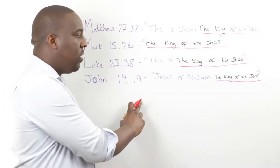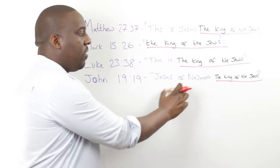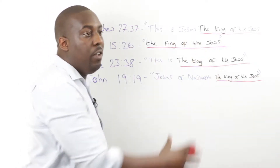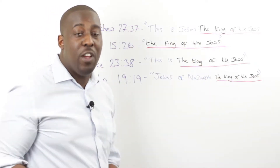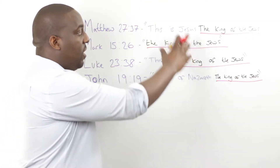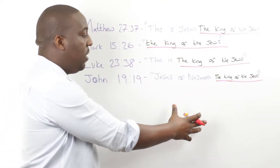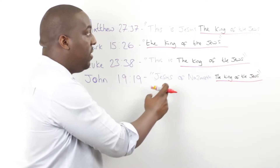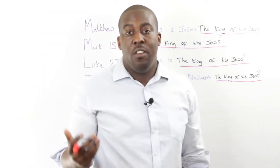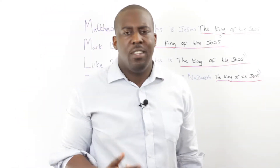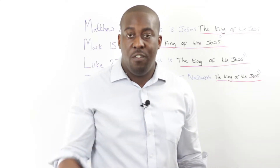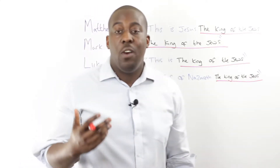Looking at all four, if you wanted a loose explanation, you could simply say that what this says in totality is: 'This is Jesus of Nazareth, the King of the Jews.' That'll be enough for some people — you can say they just chose to focus on different things. But there's actually an even better reason why these accounts may say different things, and why it's not actually a problem.